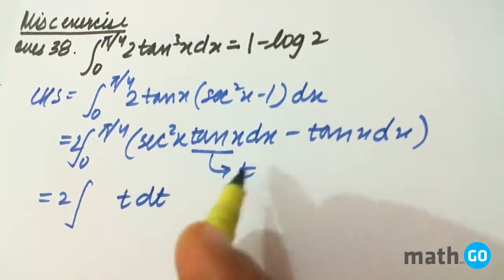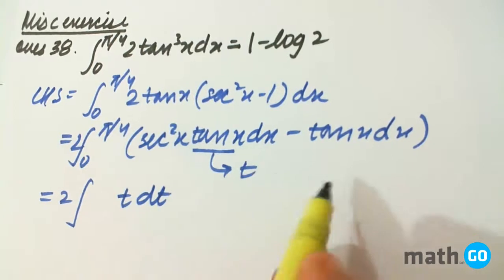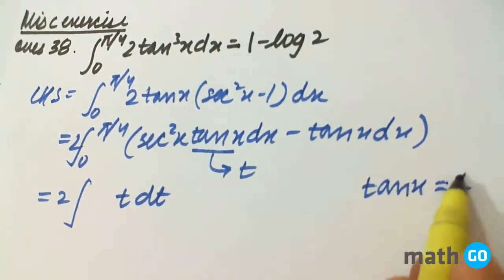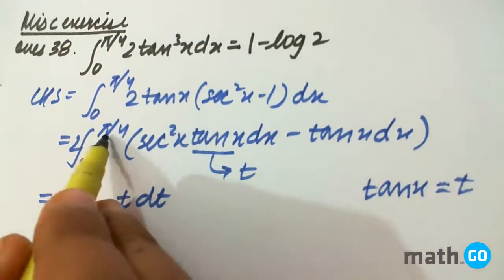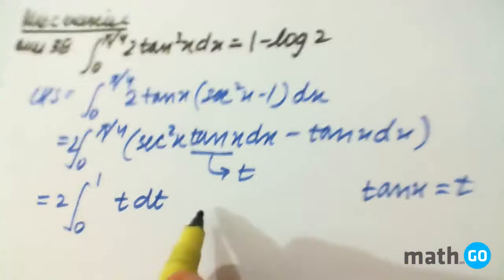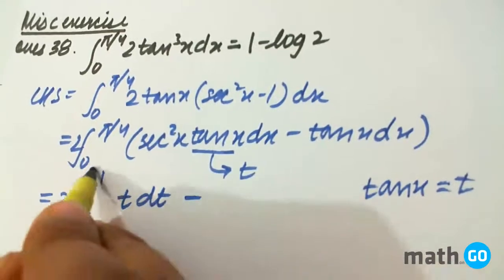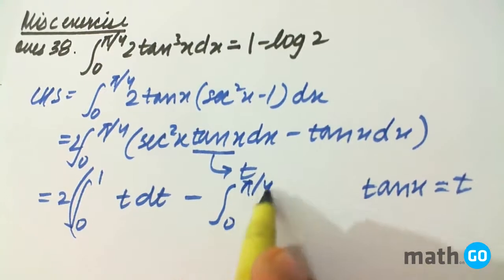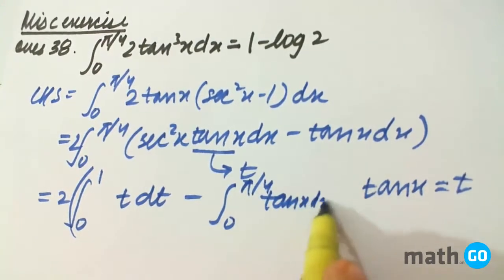If we change the limits, we have kept tan x equals to t, so if x is π/4 we will have 1, if 0 we have 0. Minus integration of 0 to π/4 tan x dx.